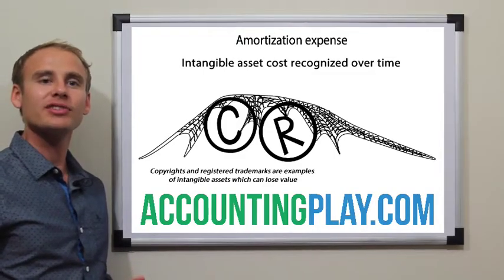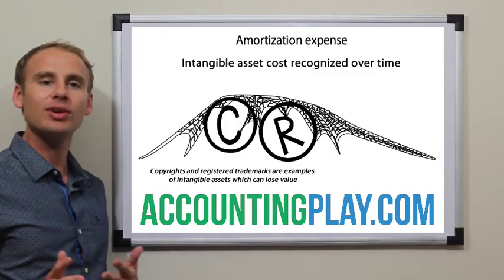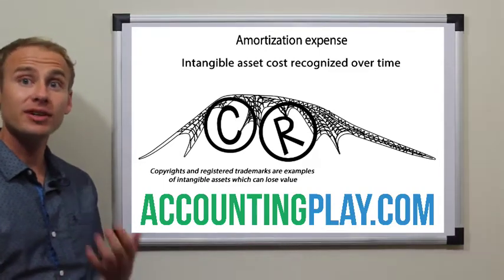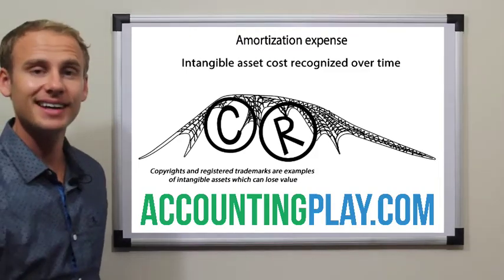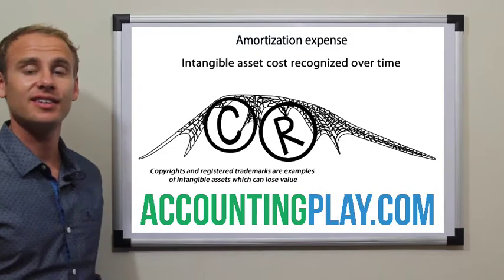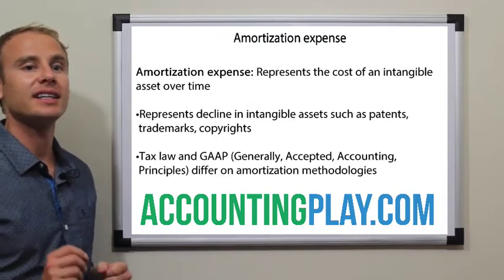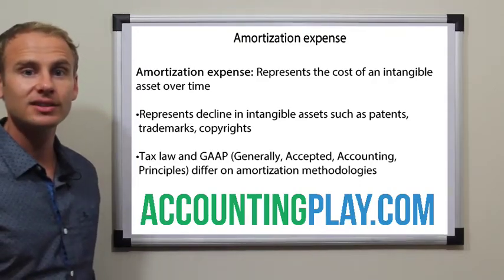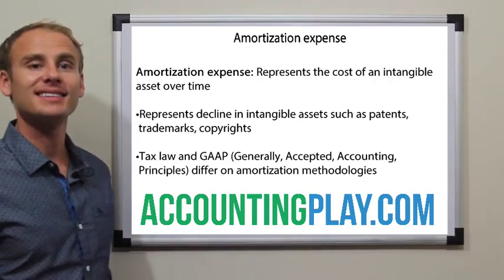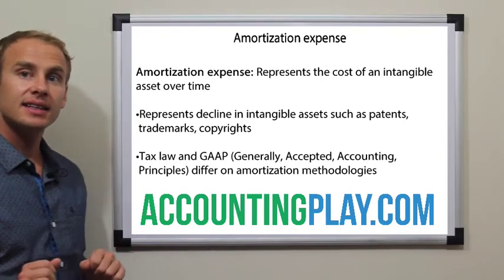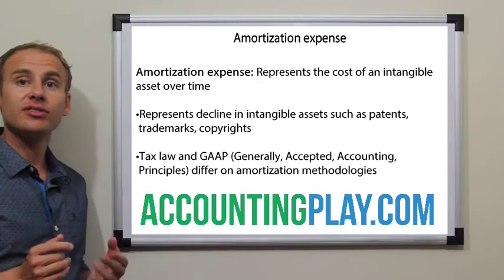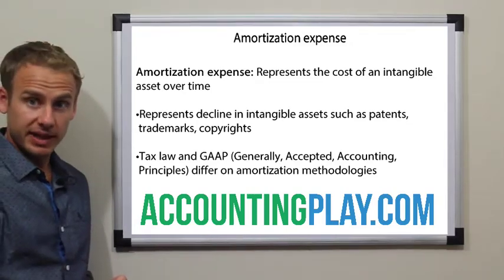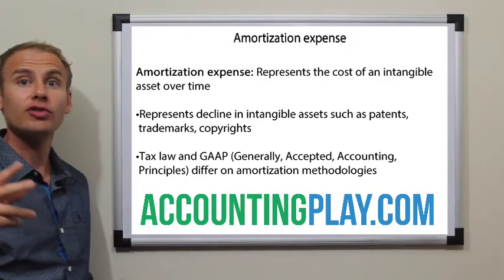Amortization expense represents the cost of an intangible asset over time, recorded using both the expense side and accumulated amortization. This represents the decline in intangible assets such as patents, trademarks, and copyrights. Tax laws and generally accepted accounting principles differ on ways to expense the cost of amortization over time.